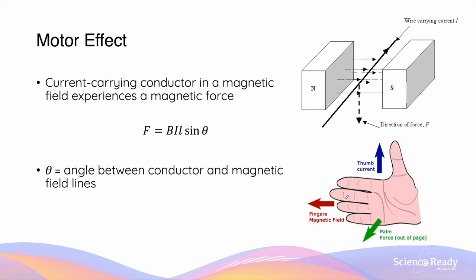Before we go through the DC motor, it's important to review the motor effect. The motor effect refers to when a current-carrying conductor is placed inside a magnetic field and experiences a force due to the magnetic field. The magnitude of this force is given by the equation F = BIL sine theta.